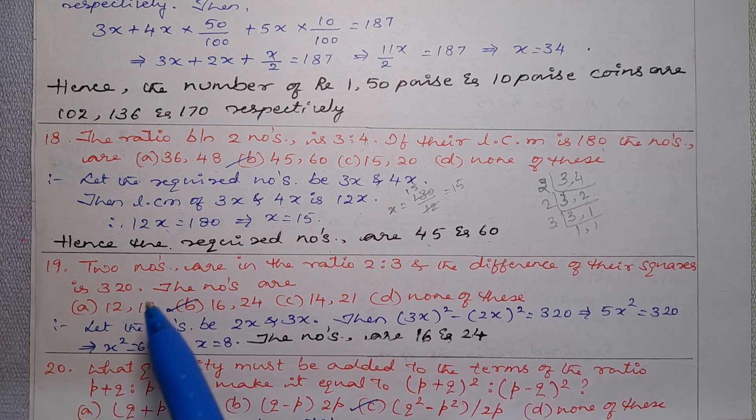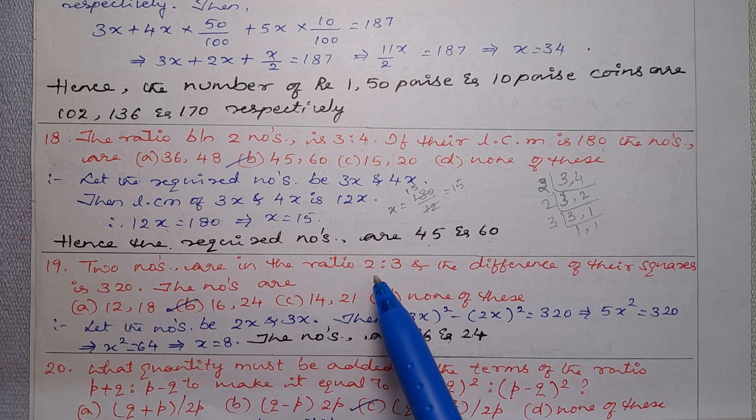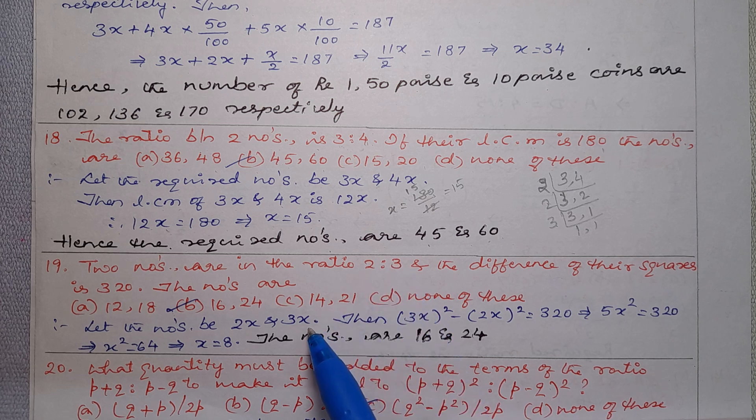So see the solution for this problem. Let the numbers be 2x and 3x. So it is 2x, it is 3x. This is our assumption.